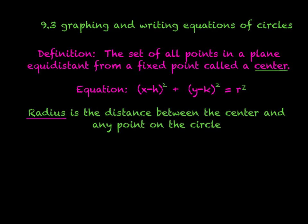The equation, you should recognize some of these, are x minus h squared plus y minus k squared equals r squared, and it is going to end up that h and k are the center of our circle. You should have looked at this last year in geometry. The last definition of circle that you need to know is the radius is the distance between the center and any point on the circle.